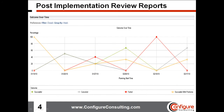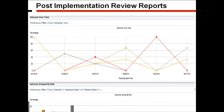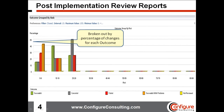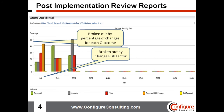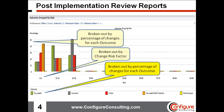The post-implementation reports also provide highly valuable statistics, including outcome over time, that helps identify trends such as an increasing or decreasing number of failed, successful, canceled, or even successful with problems changes. By applying a filter, change managers could even identify increasing or decreasing trends for a specific implementer. The other post-implementation report helps identify the percentage of changes for the outcome of each change, correlates that to the risk factor value, and ties it all together with the outcome statistics in a simple graphical format.